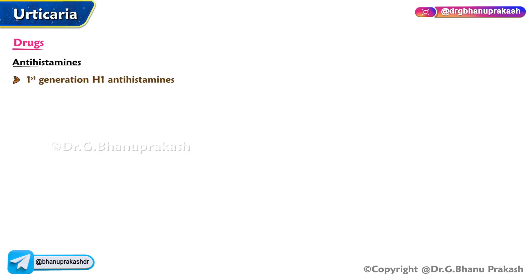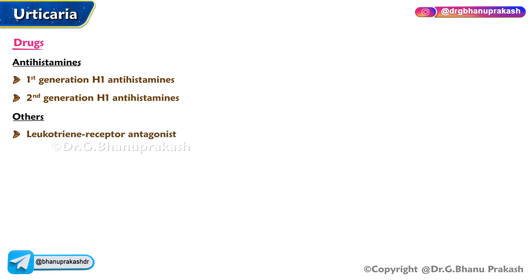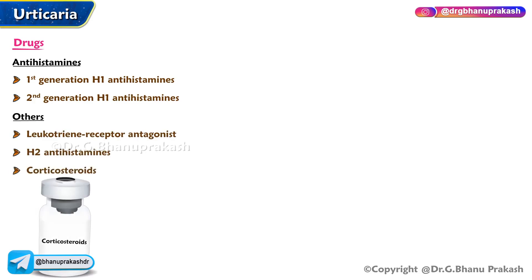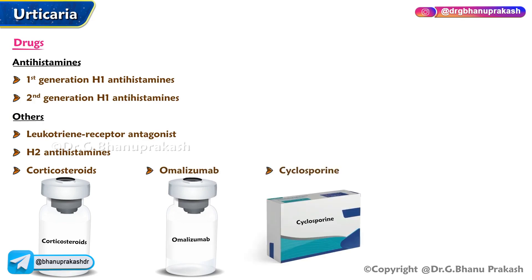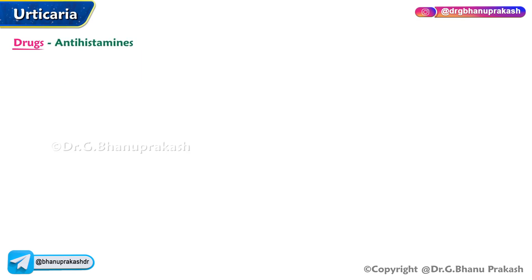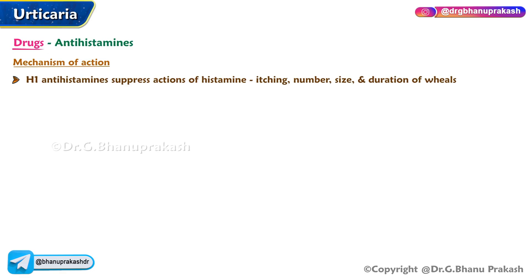Drugs used in the treatment of urticaria include antihistamines — first-generation H1 antihistamines and second-generation H1 antihistamines — as well as corticosteroids, omalizumab, cyclosporine, and methotrexate. Mechanism of action of H1 antihistamines: they suppress the actions of histamine such as itching, and the number, size, and duration of wheals.